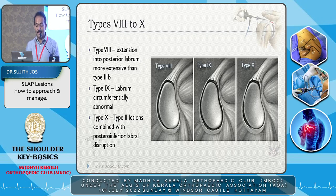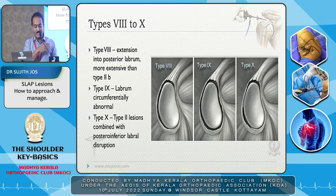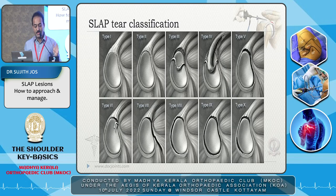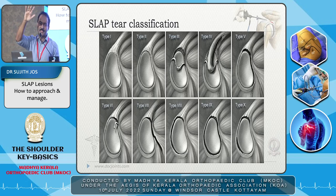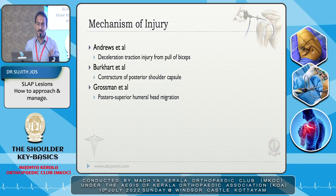Types 8, 9, and 10: Type 8 extends posteriorly. Type 9 is a circumferential tear of the labrum. Type 10 involves the Kim's lesion and the superior labral tear together. For practical purposes, just understand the first four types. The others can be dealt with separately as a Bankart with a SLAP. Think about it that way — otherwise you might miss the Bankart tear, because SLAP is a less important lesion when considering a dislocating shoulder.